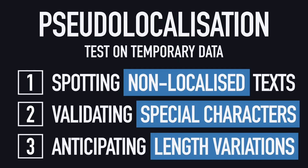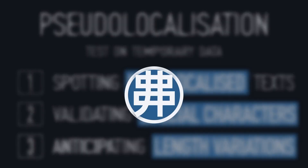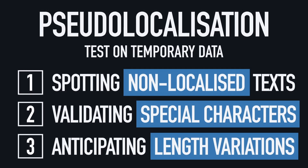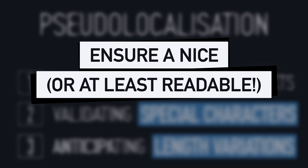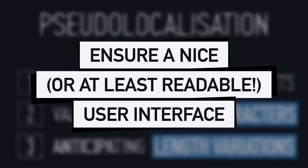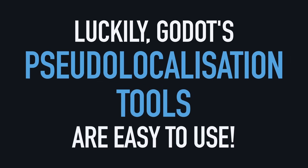Finally, a third common issue with i18n text is variations in length. Languages all have different grammatical constructions and vocabulary, so the same sentence might be very different in terms of character count from one locale to another. Kanjis are again an extreme case, since an entire word can be represented by just a single character in a line. Add to that that sometimes you don't have a direct translation and need to find a tailored translation for a chunk of dialogue, and you see that even from a technical point of view, translation isn't just about switching up a few letters. So you need to be aware of the overall length of your text in various languages to make sure that your user interface is always nice, or at the very least, readable. And luckily, Godot's pseudo-localization has a set of tools that are super easy to use.